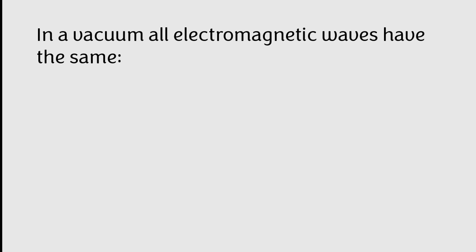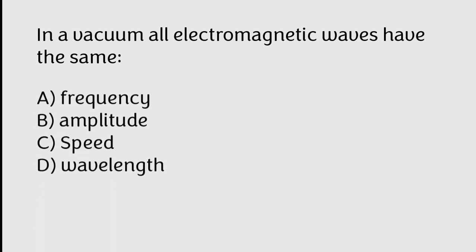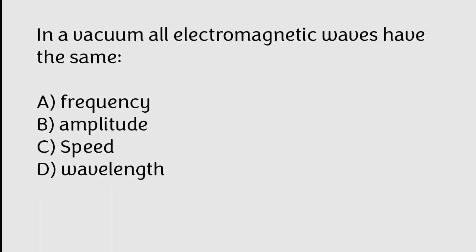In a vacuum all electromagnetic waves have the same: frequency, amplitude, speed, wavelength. The correct answer is Option C. In a vacuum all electromagnetic waves have the same speed.